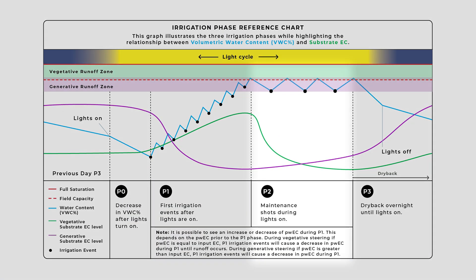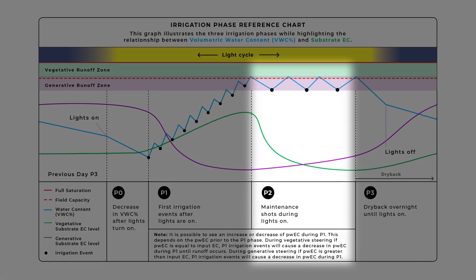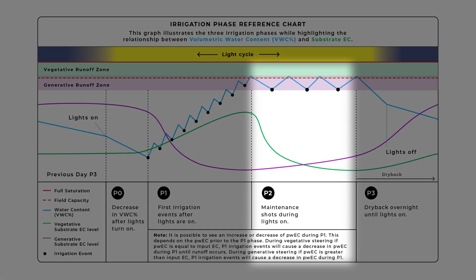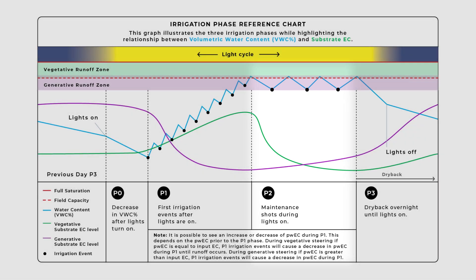We will continue to use P1 irrigation events each time we reach a 20% dryback. During the beginning stages of veg, we will focus solely on P1 and P3 phases because growth is slower and plants transpire less rapidly. After our dryback exceeds 20%, introducing P2 irrigation events becomes necessary to maintain optimal substrate moisture throughout the day. Veg is the most delicate time during our growth cycle, so it is crucial that we hit all of our dryback targets to avoid stunted growth.